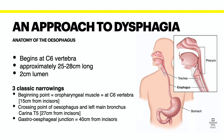The normal lumen of the esophagus is 20 millimeters or two centimeters. A patient typically needs to have a lumen diameter of greater than 14 millimeters or 1.4 centimeters to be able to swallow reasonably well.